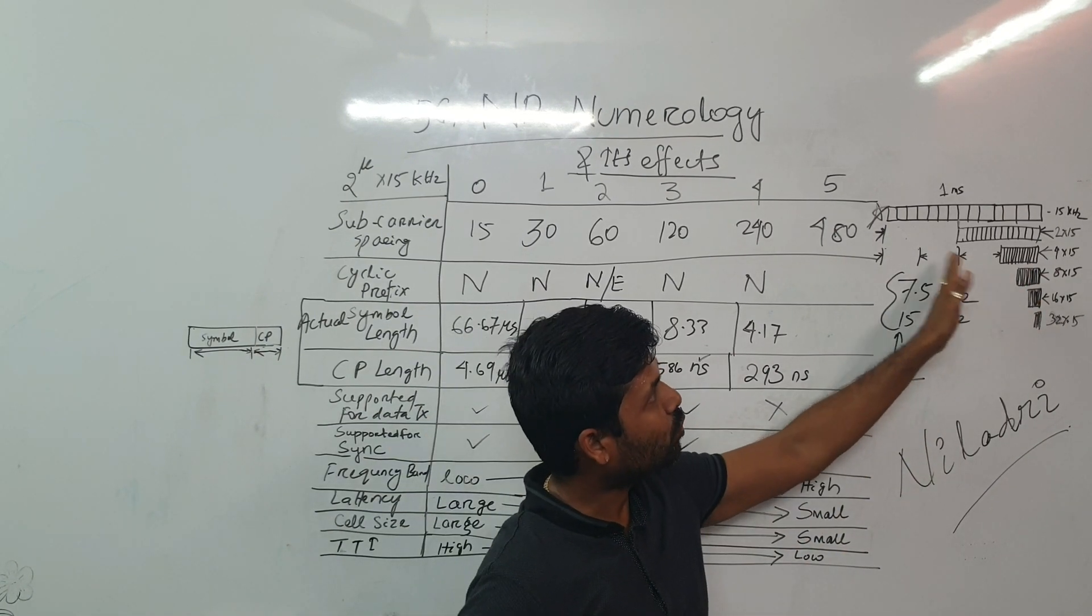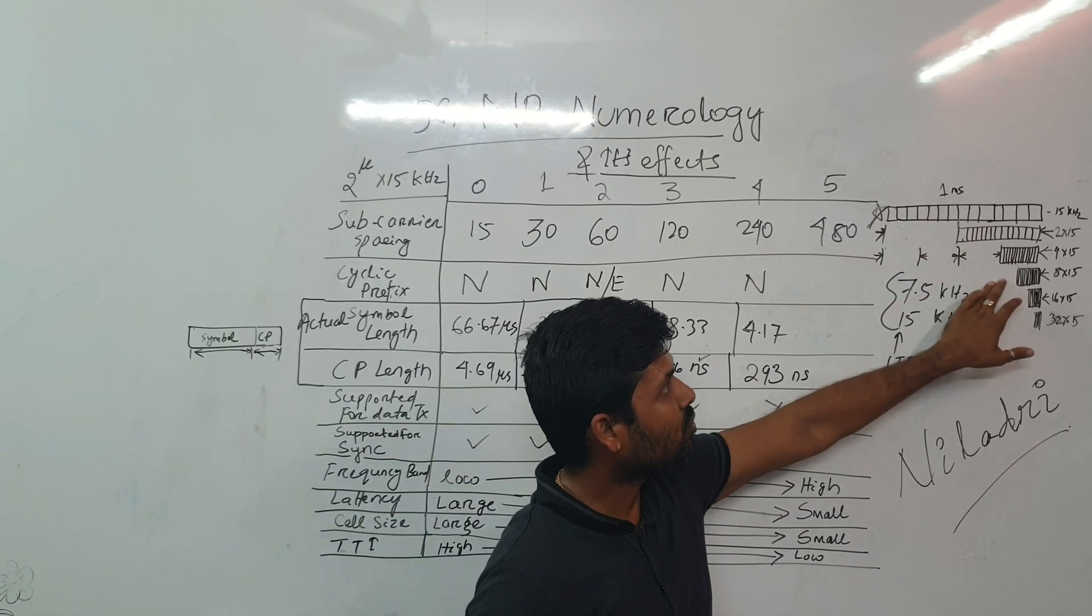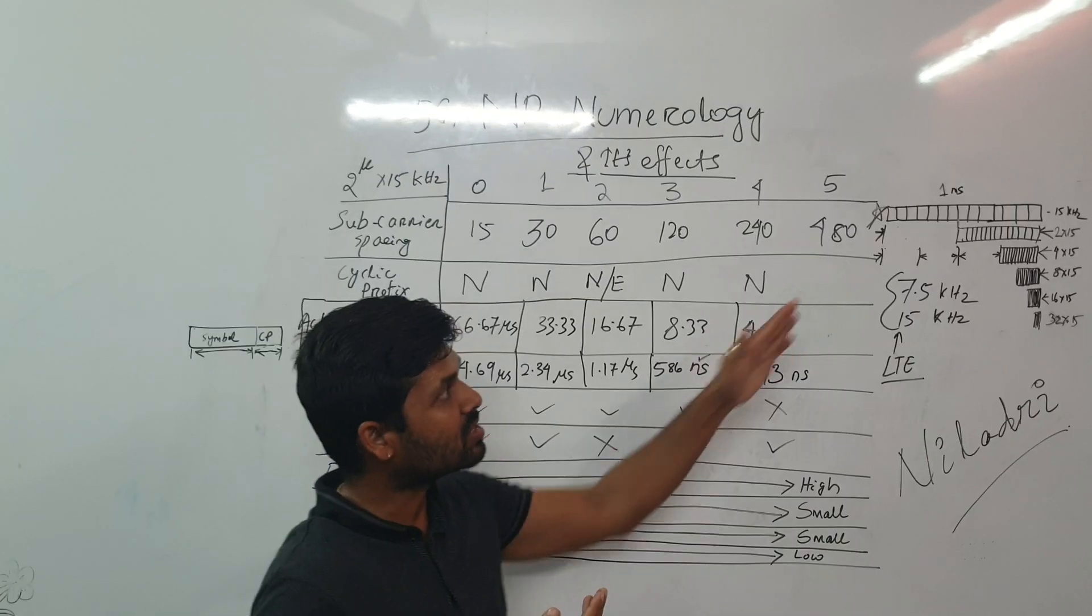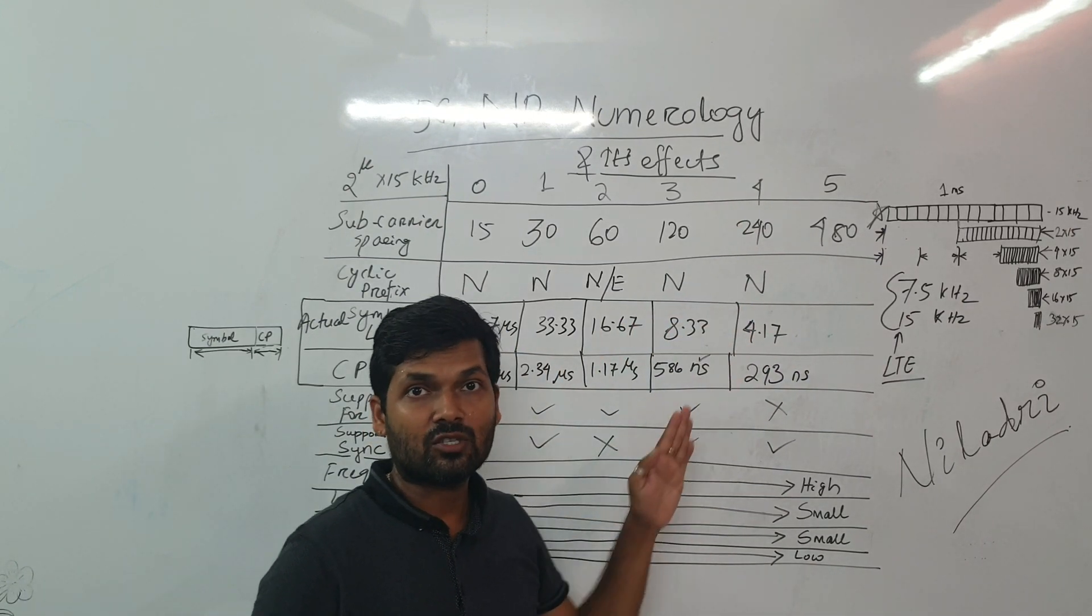That much number of 4 times 14 symbols can be used in the same time. So it will be more number of symbols can be transmitted if we are using a higher subcarrier spacing.